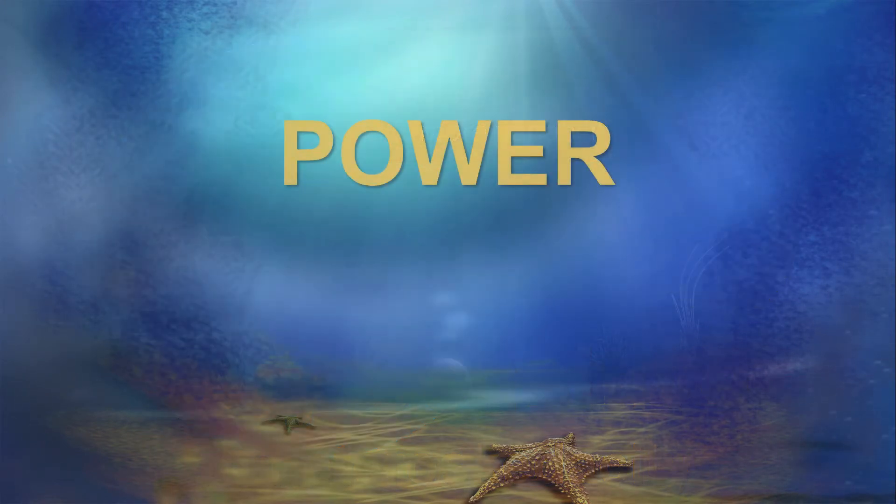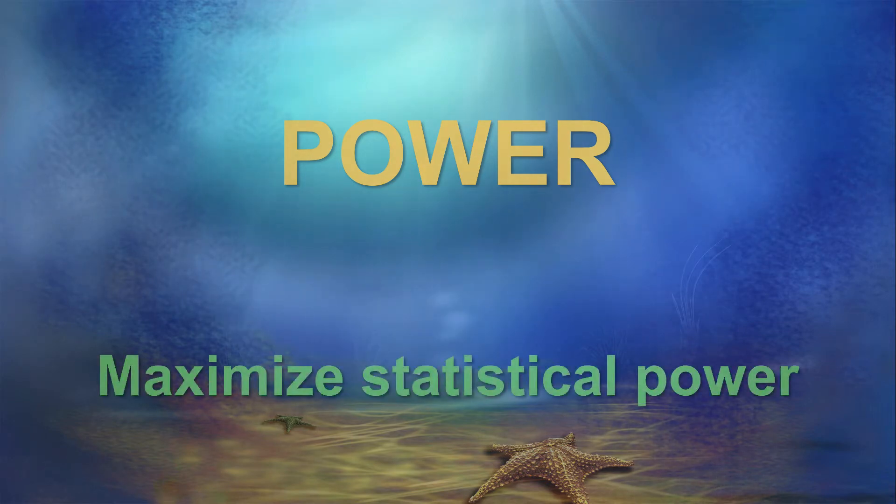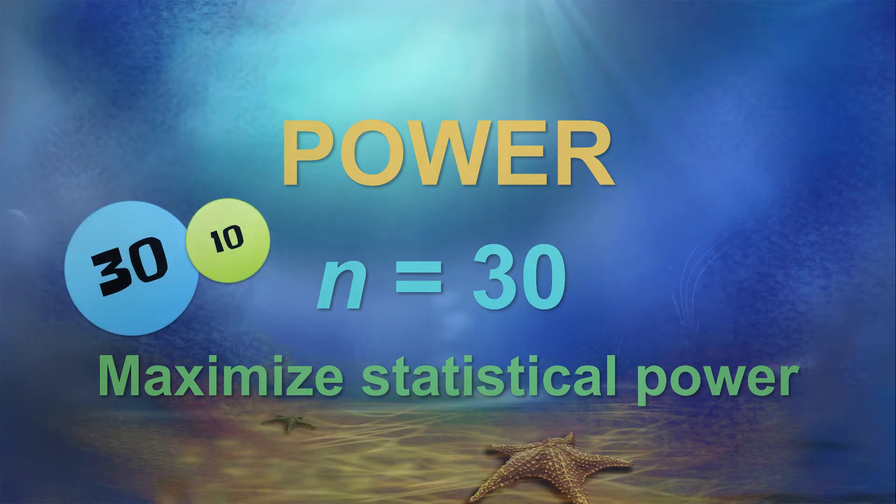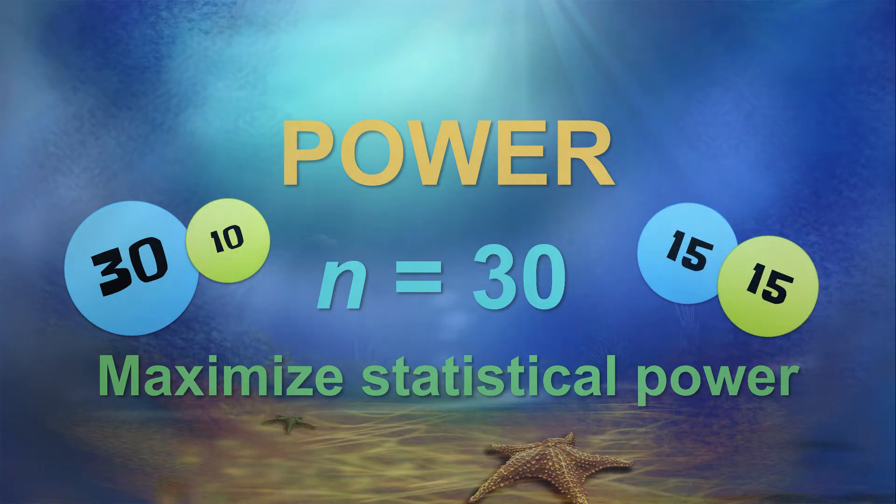Now the second reason to consider sample size is power. You want to maximize the power of your t-test. You may have heard that you need at least 30 people to do a t-test. But what if you have one group of 30 and a second group of 10? Is that a total n of 40? Or maybe you have 30 people total, and you want to divide them into two groups of 15 each.